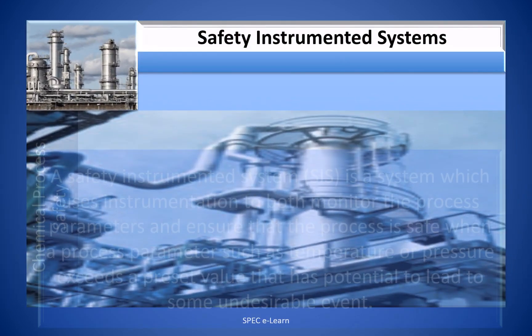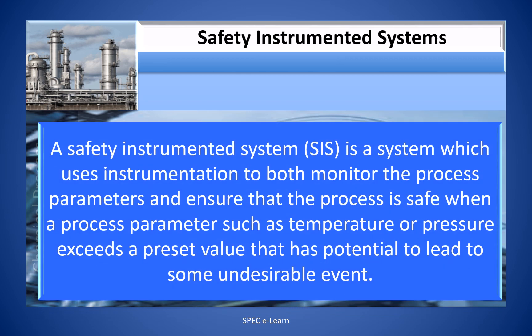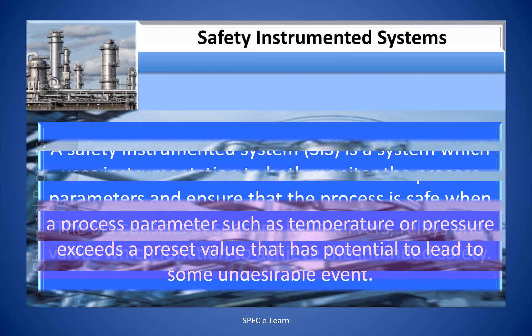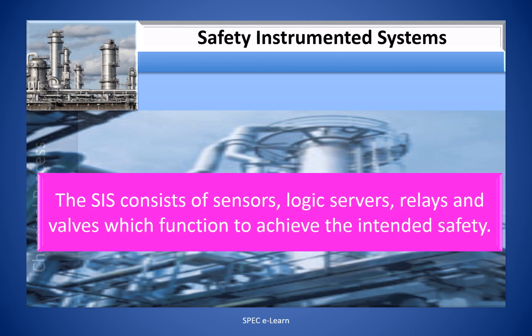A Safety Instrumented System uses instrumentation to both monitor process parameters and ensure that the process is safe when a parameter such as temperature or pressure exceeds a preset value that has potential to lead to some undesirable event. The SIS consists of sensors, logic solvers, relays, and valves which function together to achieve the intended safety.